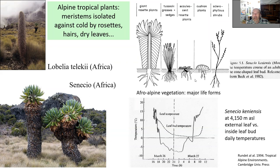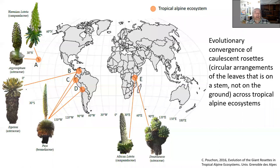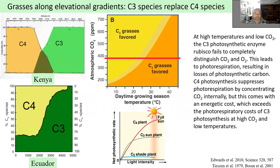There is an interesting convergence in evolution into this kind of protected plants in the alpine zones, coming from different families. In the Mount Kilimanjaro area you have Dendrosenecio (Asteraceae) and Lobelia (Campanulaceae). There are also bromeliads in the neotropics, and Asteraceae again. In Hawaii there is also Hawaiian Lobelia - recruiting from the same life form as the African one.